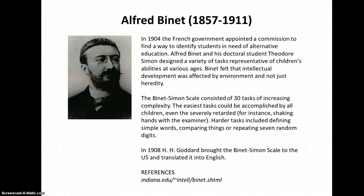The Binet-Simon scale consisted of 30 tasks of increasing complexity. The easiest tasks could be accomplished by any child, even the severely retarded. For instance, the examiner may ask to shake hands with the child. Harder tasks included defining simple words, comparing two items, or repeating seven random digits.